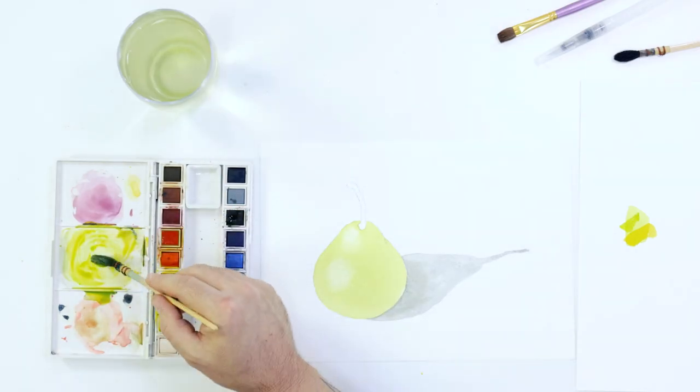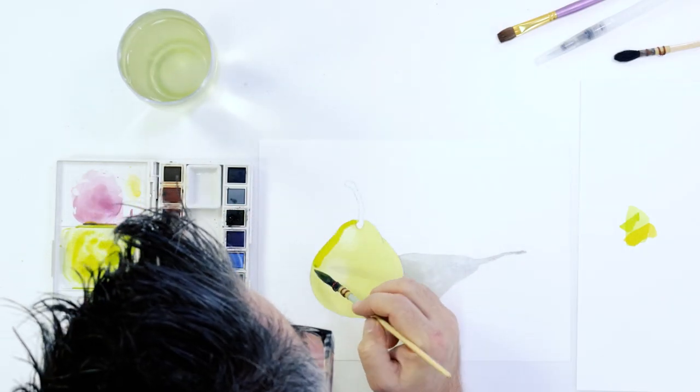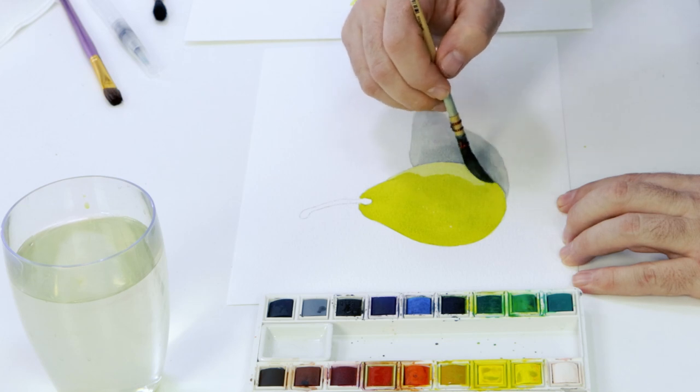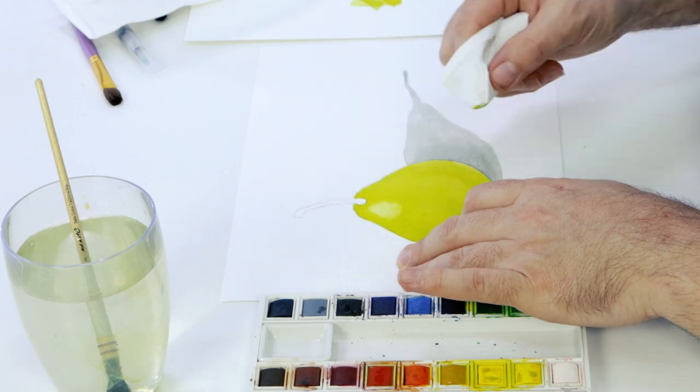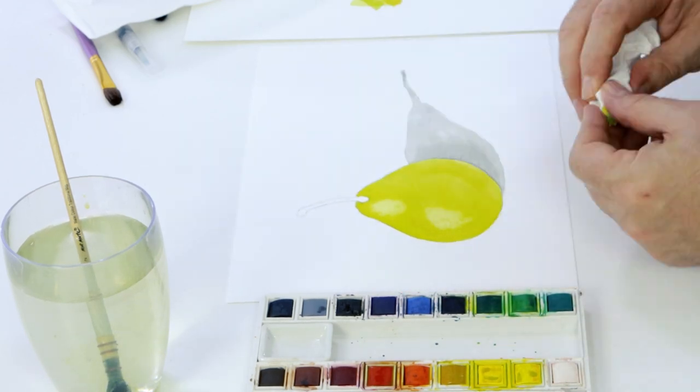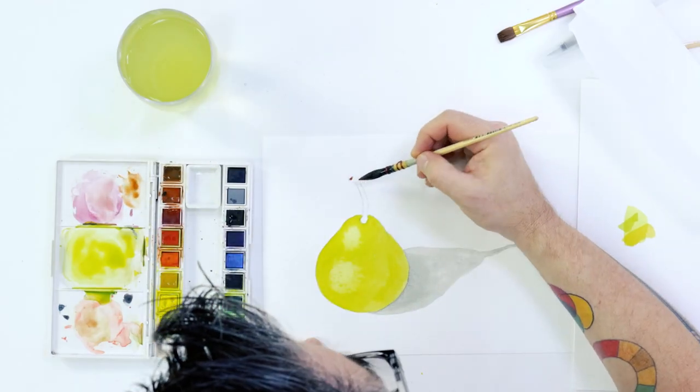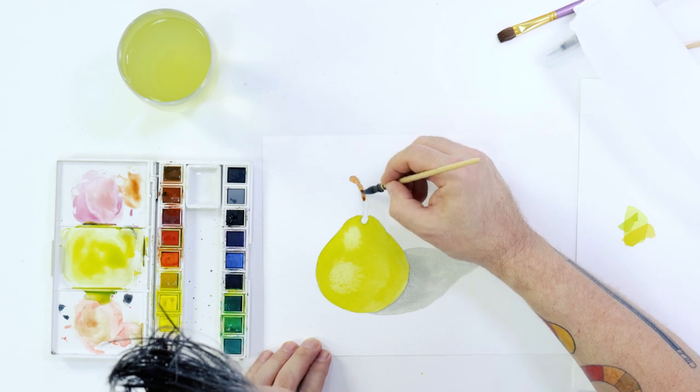We can then darken the mix with a little dark blue and lay this over the pear. Blot out the highlight areas again and the area in front of the pear. This will suggest reflected light in shadow. While this is drying, the stalk can be painted in brown.